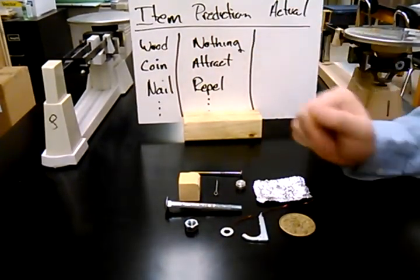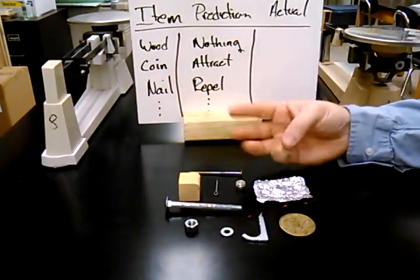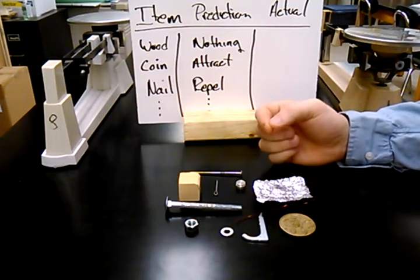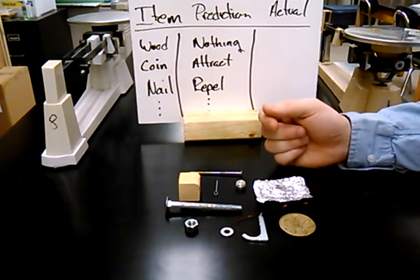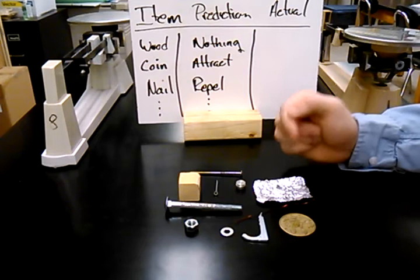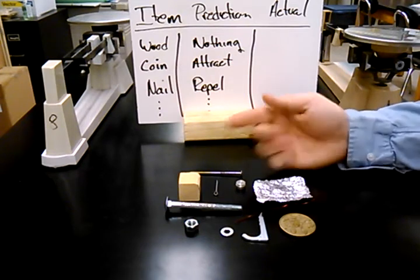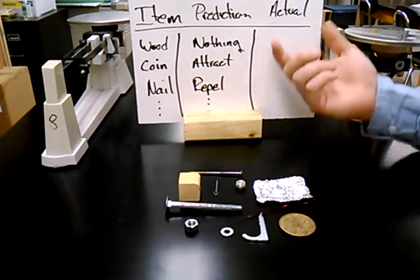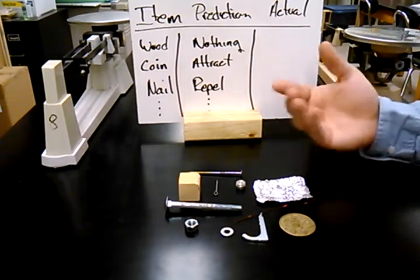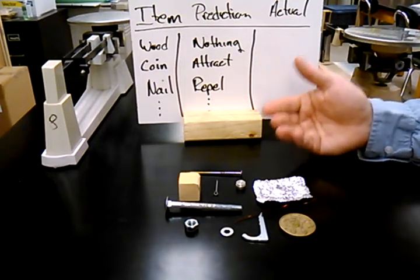Now a magnet will do one of three things with these items. It will either attract to that item, it will repel that item, or it will do nothing. And then what I have over here is the space available for what actually happens with the magnet.